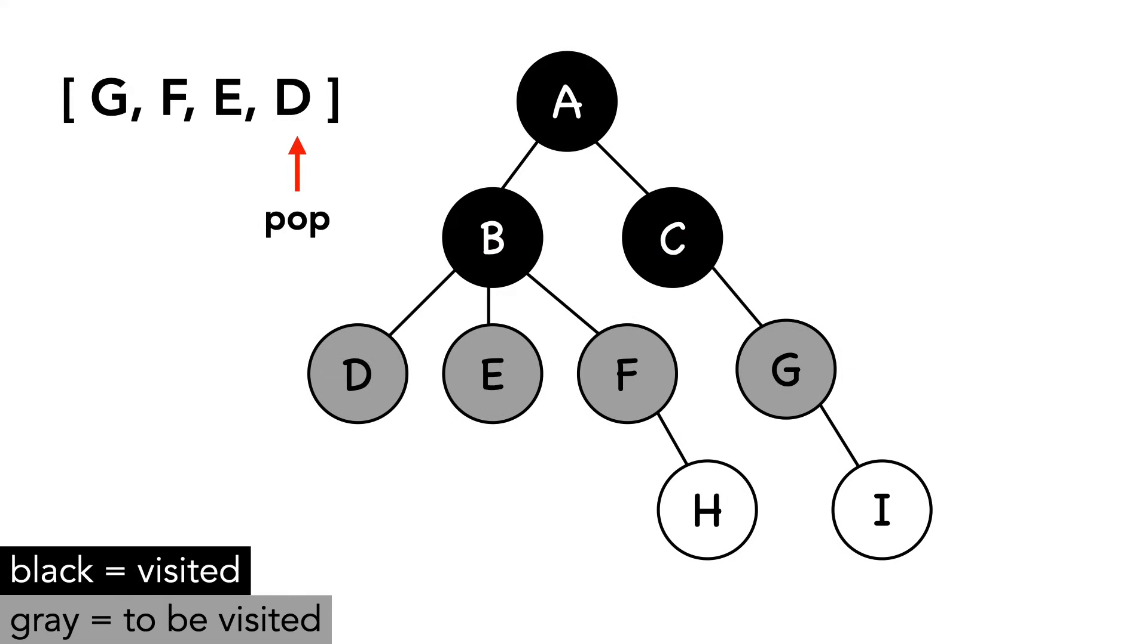D is the next item out of the queue. I'll let the rest of the algorithm finish without voiceover.